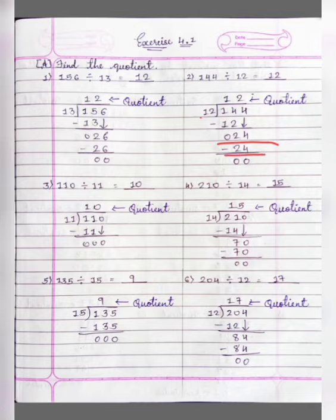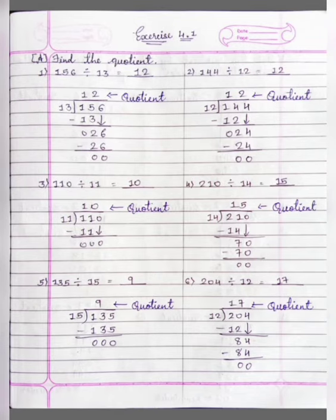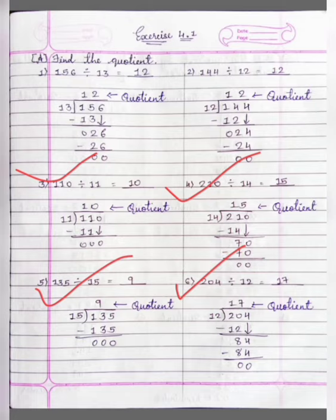24 minus 24 is 0. Our quotient is 12. In the same way, numbers 3, 4, 5 and 6 you can practice yourself. Otherwise, you can see the answer here.